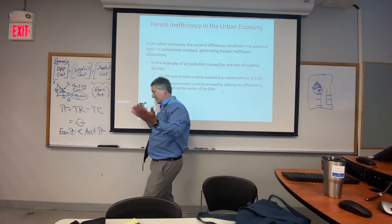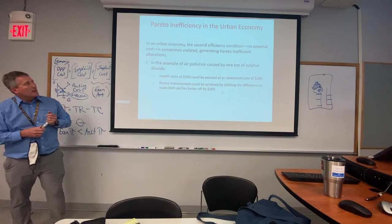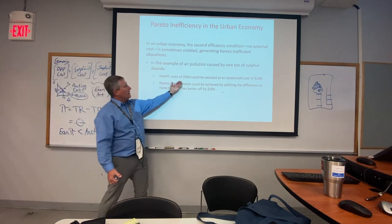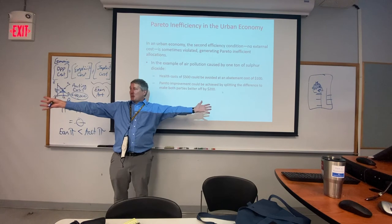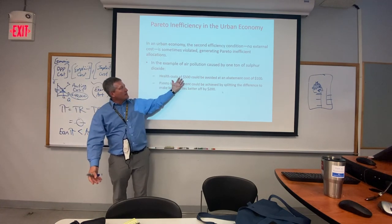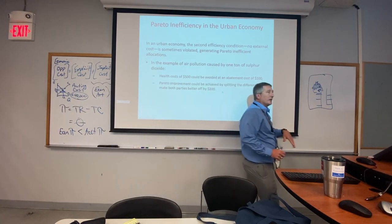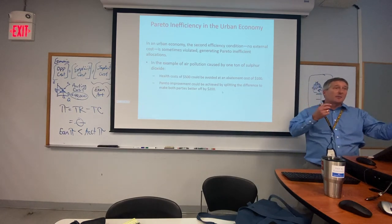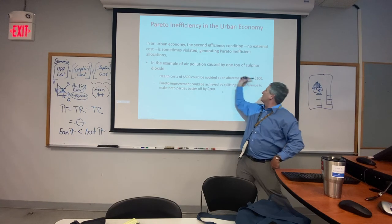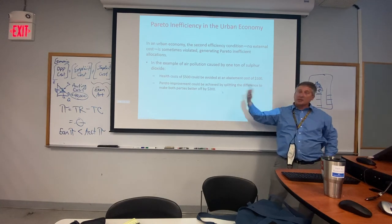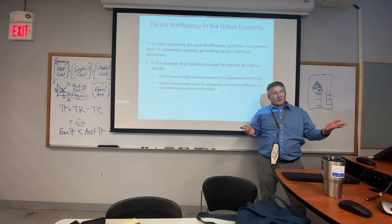Consider a pollution or health concern: if you add up all the distributed health costs from many affected people, a corrective measure costing a hundred dollars might be justified by the marginal benefit exceeding marginal cost. But if property rights aren't in place to enforce it, it could be difficult to implement.